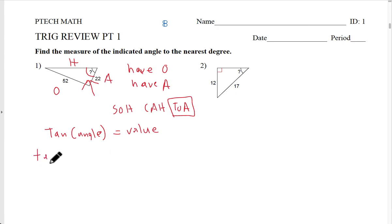It'll be tan to the negative one. Sometimes you're going to see this as arctan, but we're going to focus on tan to the negative one because this is how you can see it on the calculator you're using. So you get tan to the negative one of the value, and then that's going to spit back out for you the angle.